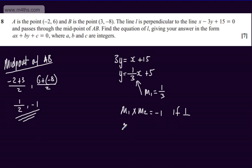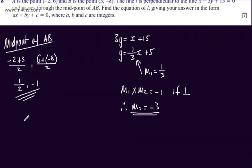Therefore, the gradient of the line perpendicular to this one, which is L: M2 will be equal to the negative reciprocal of 1 third, which is minus 3. So now we have a gradient and a point that it goes through. I'm simply going to substitute this into the equation of a straight line using y minus y1 is equal to M, the gradient, multiplied by x minus x1.